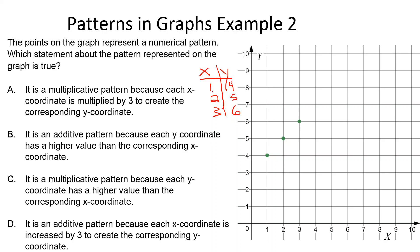We ask ourselves, what do we do to the x values in order to get to the y values? Let's start by checking to see if it's an additive pattern. What do we have to add to 1 to get 4? If we add 3, we get 4. Is 2 plus 3 equal to 5? It is. Is 3 plus 3 equal to 6? It is. Since we can add the same number to each of the x values to find the corresponding y values, we know it's an additive pattern.